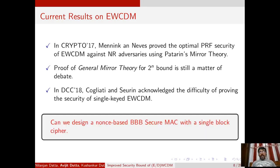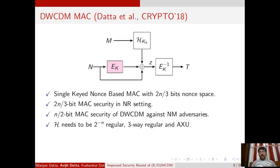Therefore, we ask: can we design a nonce-based beyond-birthday-bound secure MAC with a single block cipher? In Crypto 2018, Dutta et al. proposed their construction known as Decrypted Wegman-Carter with Davis-Mayer (DWCDM). In this construction, the second block cipher call of EWCDM is replaced with the inverse of ek, so the construction essentially uses a single block cipher key. The authors proved that their construction is 2n/3-bit MAC-secure in the nonce-respecting setting and n/2-bit MAC-secure in the nonce-misuse setting.